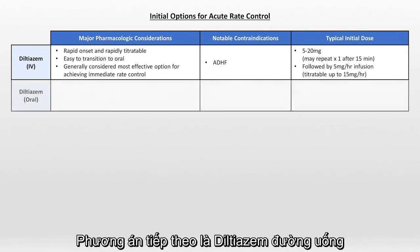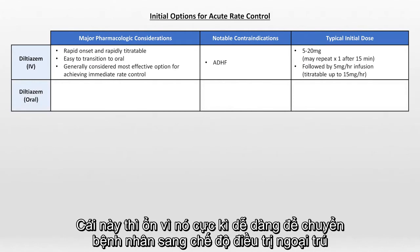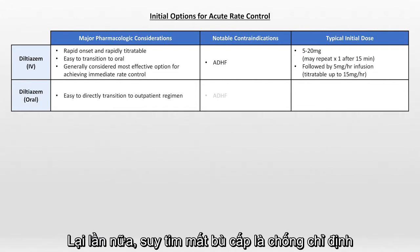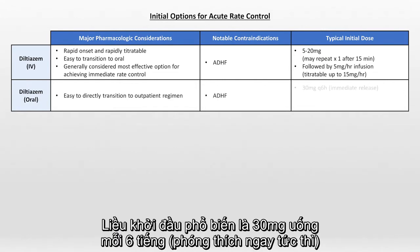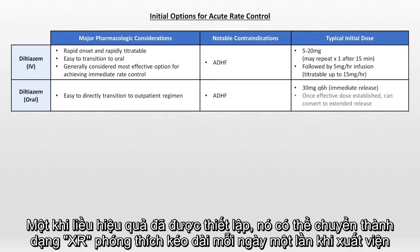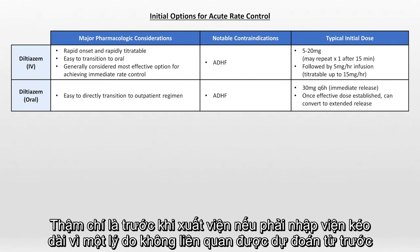The next option is oral diltiazem, which is nice because it's extremely easy to transition the patient to an outpatient regimen. Acute heart failure is again a contraindication. A common starting dose is 30 mg Q6 hours of immediate release. Once an effective dose is established, it can be converted to once-daily extended release upon discharge, or even before discharge if a prolonged hospitalization for an unrelated reason is anticipated.